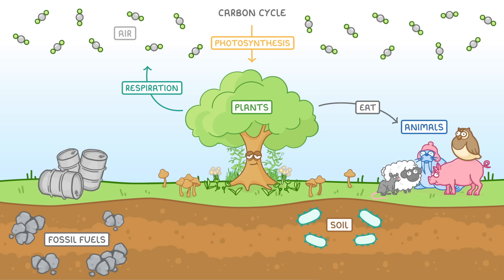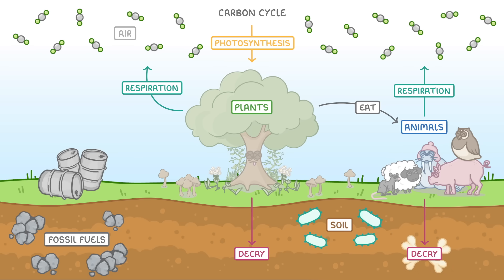And of course the animals themselves could then also respire to release carbon dioxide. When these plants and animals die, two more things can happen to the carbon. One is that the organisms are decayed by microorganisms that live in the warm, moist, aerobic conditions of the soil. This will break them into smaller and smaller pieces, until all of the carbon has been released as carbon dioxide during microbial respiration.